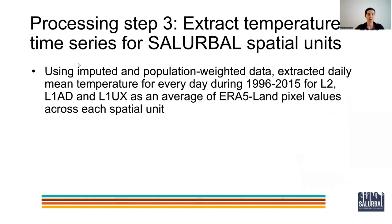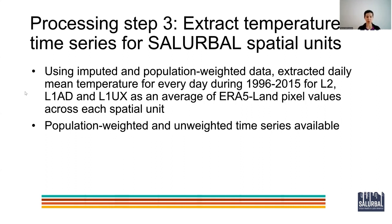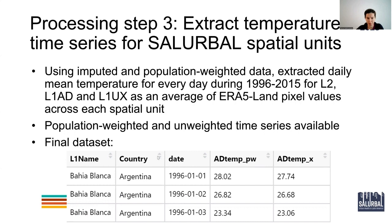Finally, using the imputed and population-weighted temperature data, we extracted daily mean temperature for every day during 1996 through 2015 for L2, L1AD, and L1UX as an average of the ERA-5 land pixels — that is, an average of the population-weighted and imputed pixels across each spatial unit. We produced both population-weighted and unweighted data for each spatial unit. The final dataset has a spatial unit field (L1AD, L1UX, or L2), a date field, and then the population-weighted mean daily temperature and the unweighted mean daily temperature for that city.